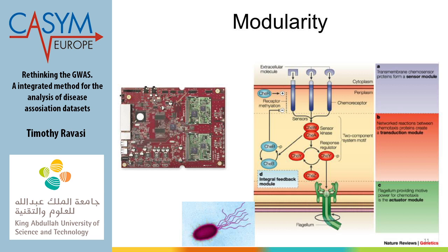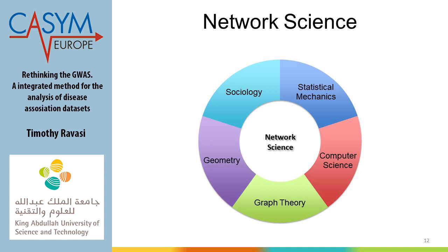That is the concept of complex systems. We know the human body is a complex system. So how can we study, visualize, and mathematically analyze complex systems in a way that biologists or medical doctors can use? Network science is the science dealing with the analysis and visualization of complex networks, spanning different disciplines: statistics, sociology, geometry, computer science, and of course biology.